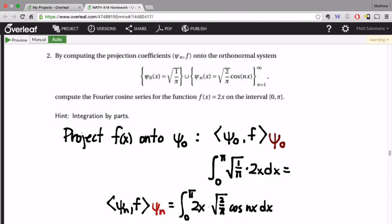And for psi 0, instead of radical 2 over pi cosine of nx, we just get radical 1 over pi, the constant, times 2x with respect to x. So computing the coefficients in this problem comes down to just computing these two integrals.